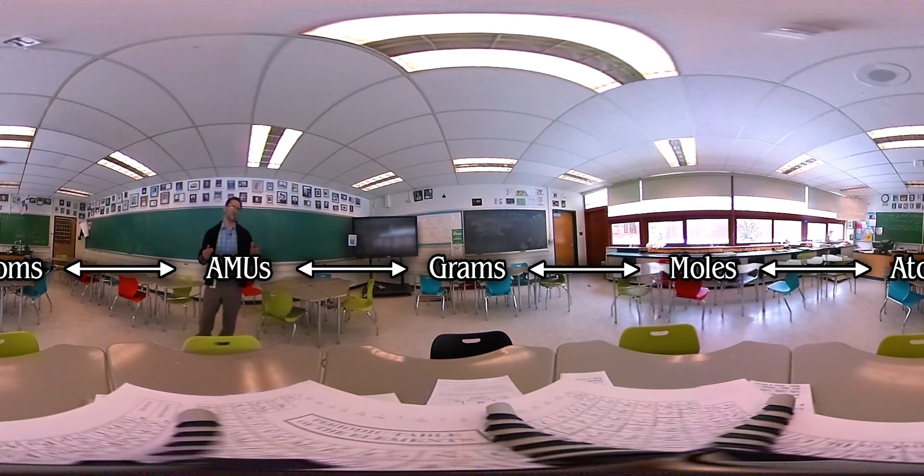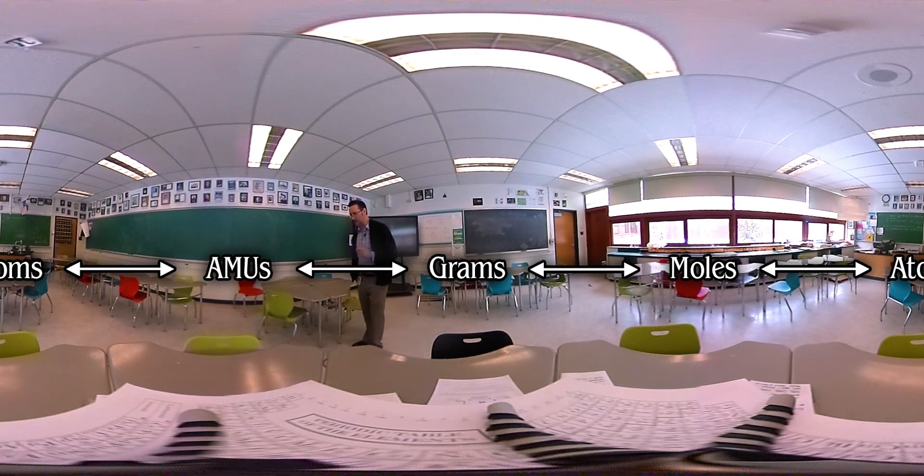Alright, so for instance if we start here with grams at this corner right and we work around this way, we can have AMUs over here. Grams to AMUs is a one-step conversion and then AMUs can go to grams but AMUs can also go to atoms and so we'll talk about atoms over here. And then finally the only unit left is going to be the idea of going from atoms to the weird concept in chemistry called the mole and we'll talk about that over here.